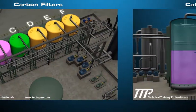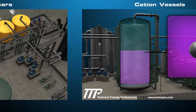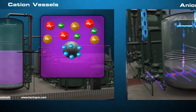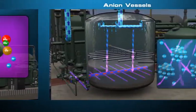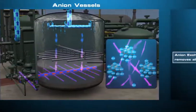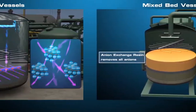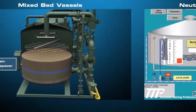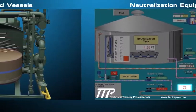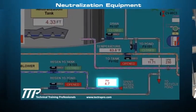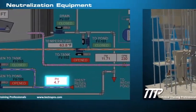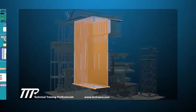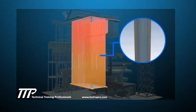They include the carbon filters, cation vessels, anion vessels, mixed bed vessels, and neutralization equipment. These systems work together to produce clean, deionized water for use in the plant boilers and the production of steam.